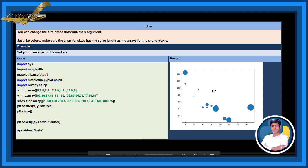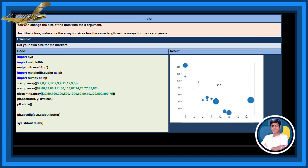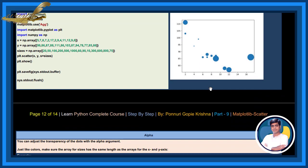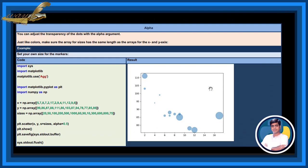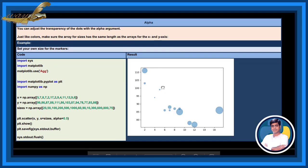Here, you can also change the transparency of the dots with the alpha argument. Just like colors, make sure the array of sizes has the same length as the arrays of the x and y axis. See, they have printed light. They have some transparency.